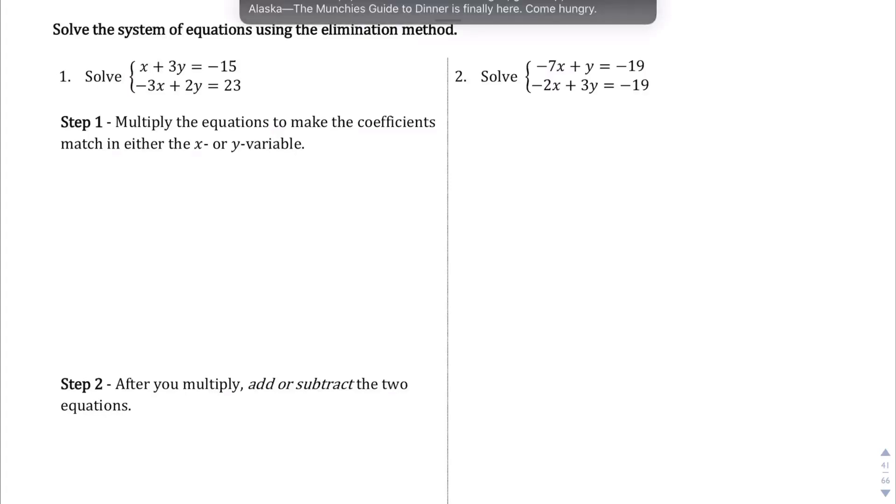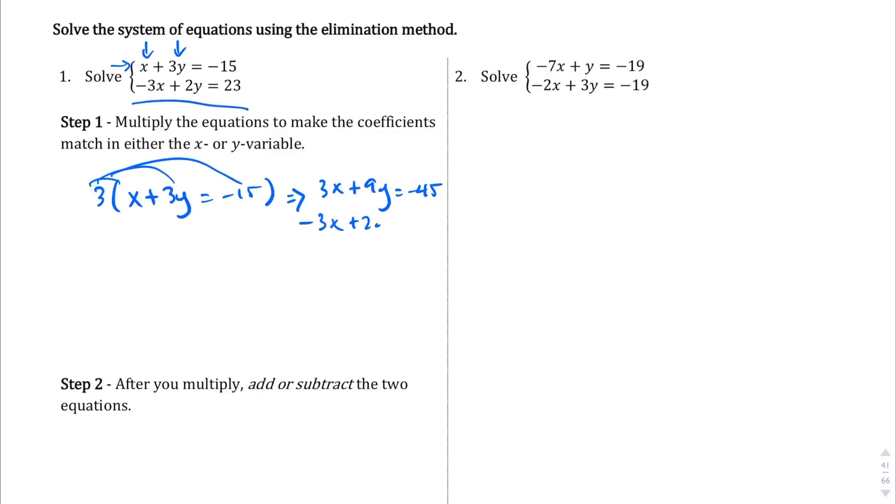Okay. So let's think about this. If we think about these equations here, we need to get rid of one of these. We can either get rid of the x's or the y's. I think I'm going to just go with the x's here, right? Because it's just one step. I can just change this whole top equation by multiplying by 3, and that'll give me a common coefficient for the x's, or at least opposite coefficients, right? So let's do 3 times x plus 3y equals minus 15. So I'm going to distribute that 3, and I'm going to end up with 3x plus 9y equals negative 45. And then the second equation is going to remain the same: negative 3x plus 2y equals 23.